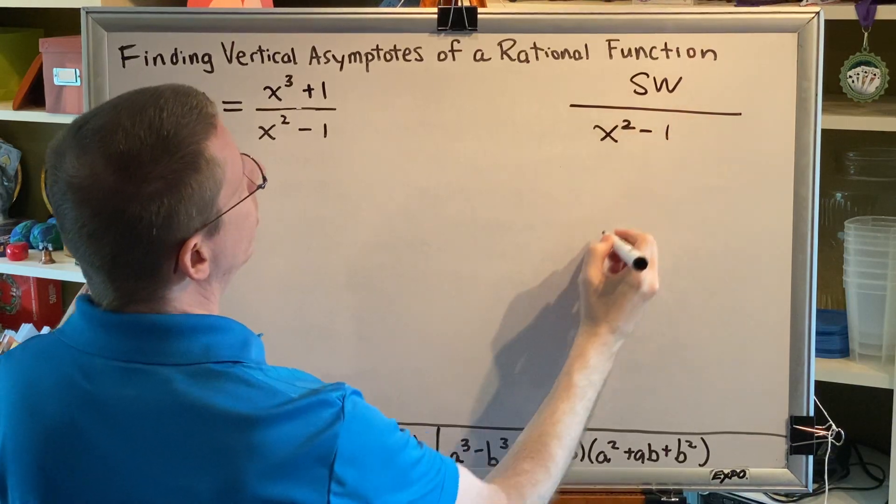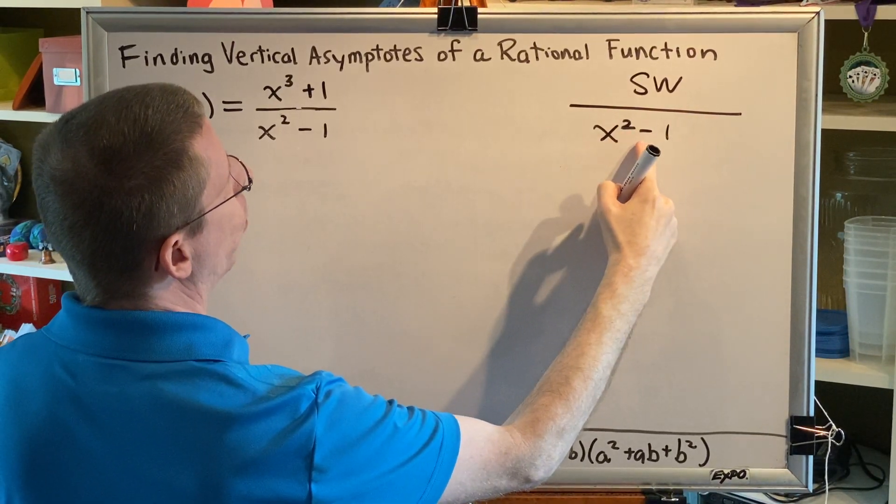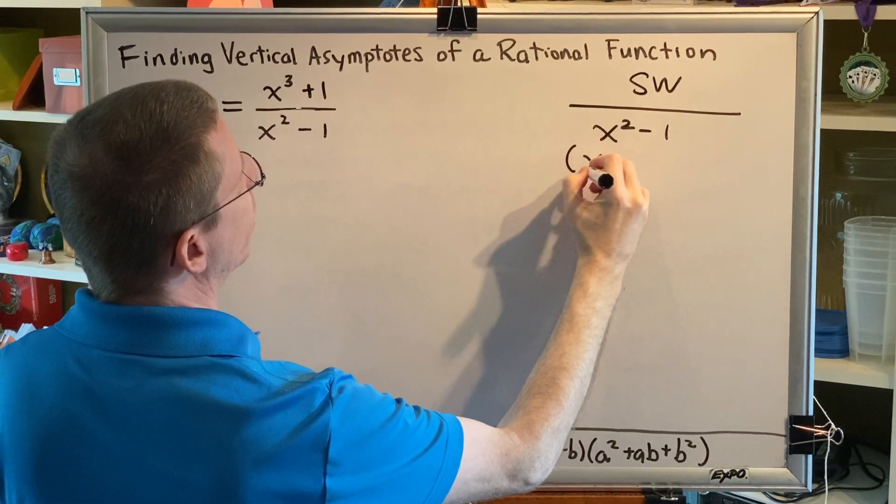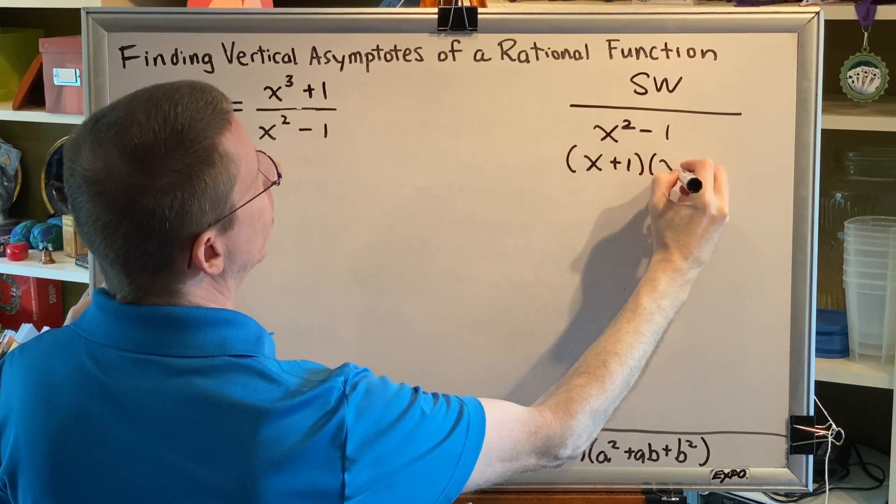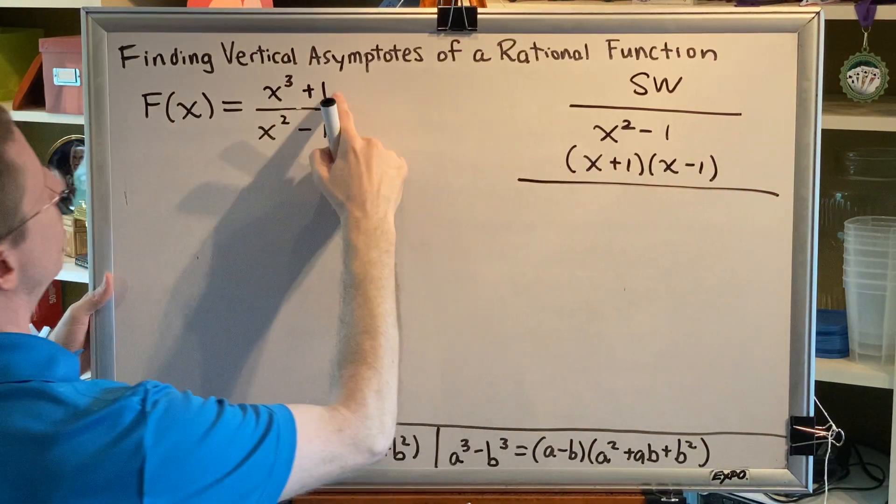So, x squared minus 1. This is a difference of squares. It's an x squared minus a 1 squared. So, this factors as x plus 1, x minus 1. All right, there we go. Easy one out of the way.